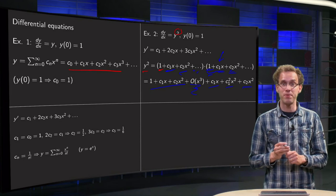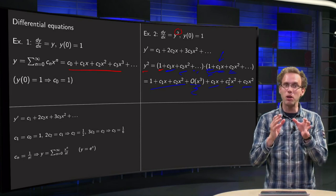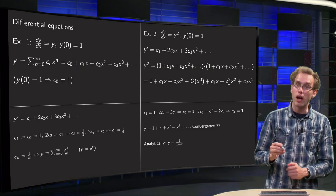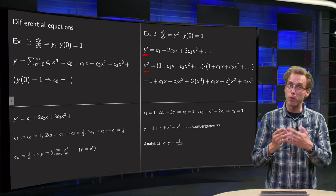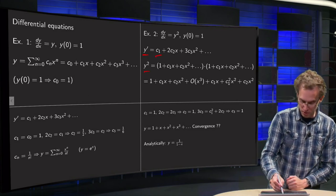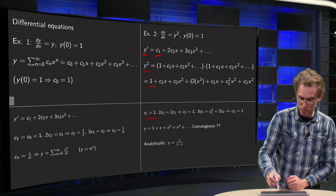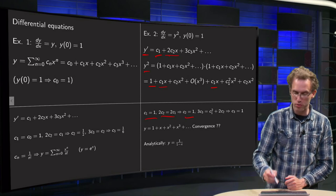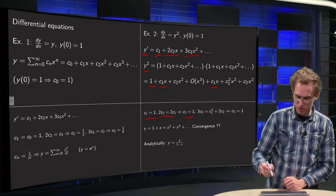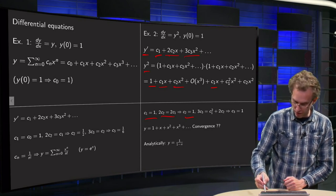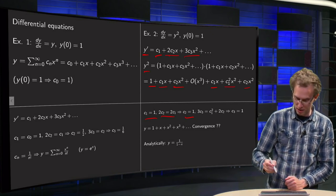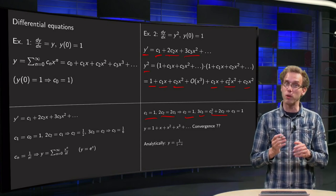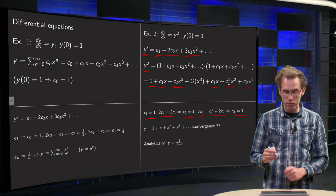Even without going to high order, it is already somewhat annoying to compute all those terms. Now we compare — y prime must equal y squared. For the x⁰ term: c1 equals 1, so c1 equals 1. For the x¹ term: 2·c2 equals c1 plus c1, so 2·c2 equals 2·c1, giving c2 equals 1. For the x² term: 3·c3 equals c1² plus 2·c2 equals 1 plus 2 equals 3, so c3 equals 1.